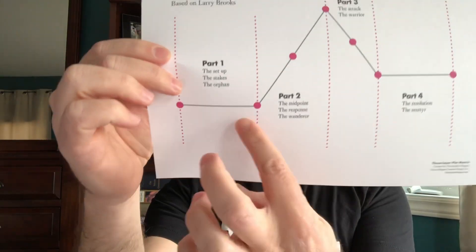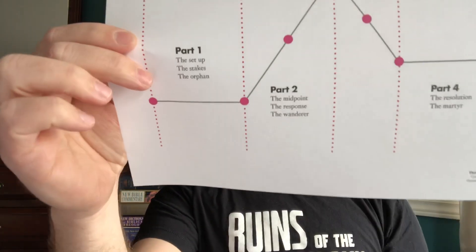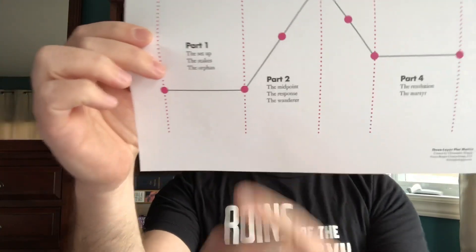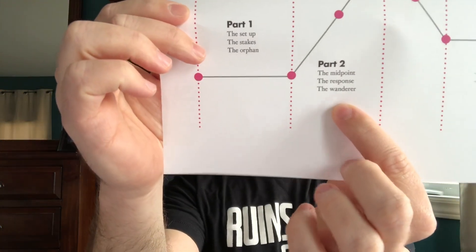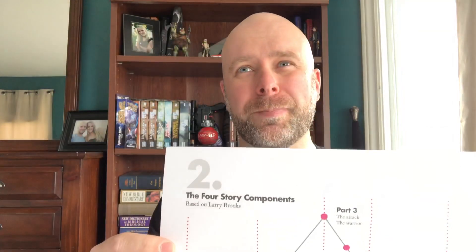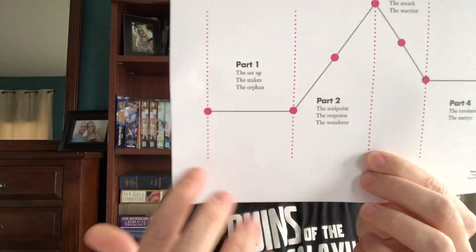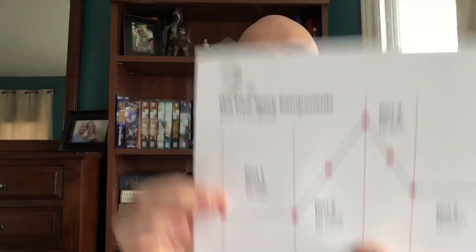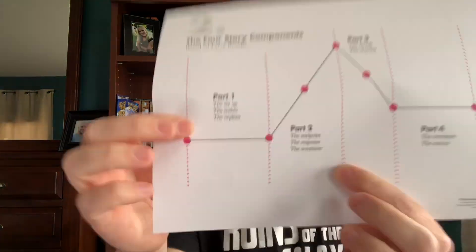The second part, which follows the rising action toward the climax, is the midpoint or leading into the midpoint — it's also the main character's response. The main character is acting kind of like a wanderer here. If it was a thriller, they're being chased by the enemy but don't know who the enemy is yet. If it's a romance, they love this person, but it's maybe unrequited love. It's a really great section for building suspense. These first two parts tend to take up the bulk of the story — probably anywhere from half to over half of the story.